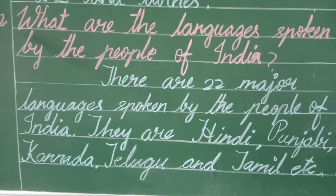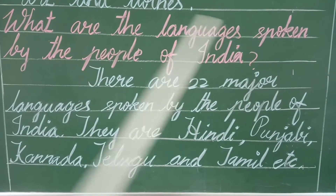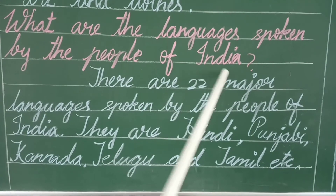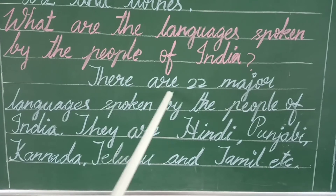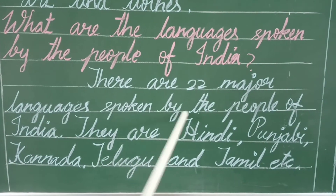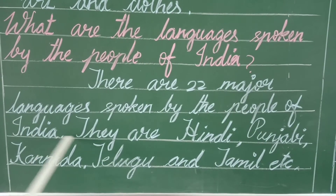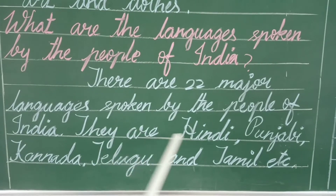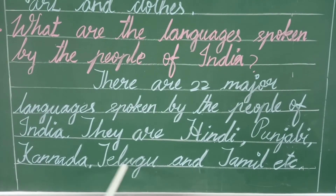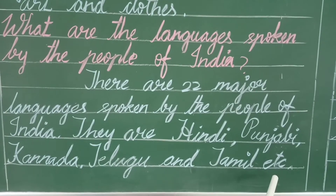Next question: What are the languages spoken by the people of India? There are 22 major languages spoken by the people of India. They are Hindi, Punjabi, Kannada, Telugu and Tamil, etc.